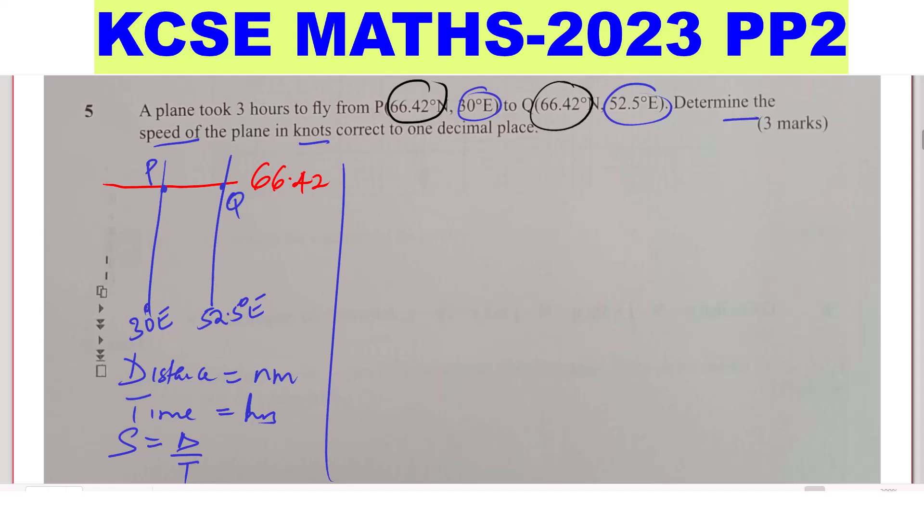To get distance along the small circle, or the circle of latitude, in knots or miles, this is how we do it. Distance is given by the formula: 60 theta cosine of alpha, where theta is the longitude difference, and alpha is the latitude angle. This is how we get the distance along the small circle, or the circle of latitude, in knots or miles.